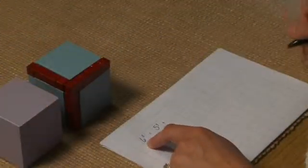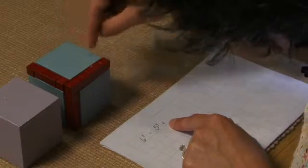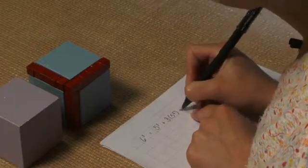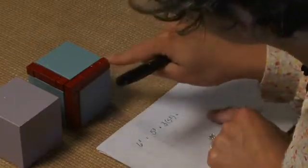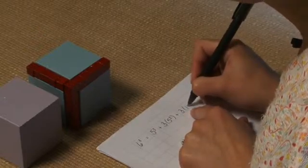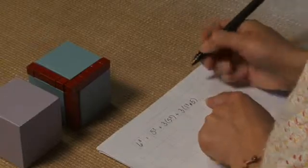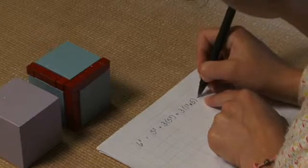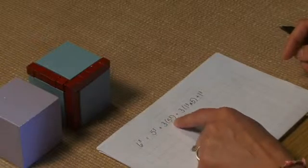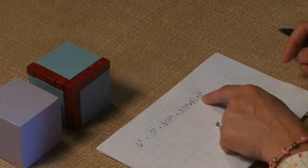So we know that to go to the 6 cubed, we started with the 5 cubed, we added the 5 square three times, and then we added 5 unit cubes three times, and then we added our 1 cube. So our equation would be 6³ = 5³ + 3×5² + 3×5 + 1.